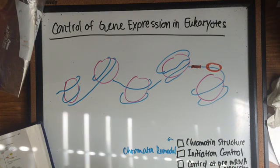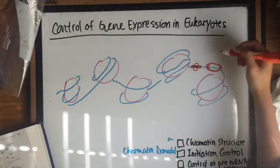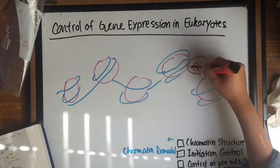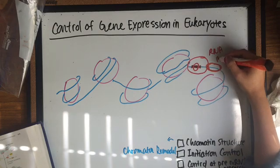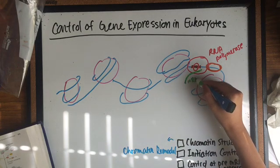The chromatin remodeling complex binds to the DNA and repositions the nucleosomes, exposing a transcription factor binding site. Once that happens, the transcription factors and RNA polymerase bind to DNA and initiate the transcription.